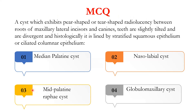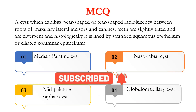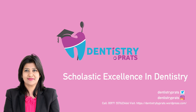To summarize: a cyst showing pear-shaped radiolucency between the roots of the maxillary lateral incisor and canine, with slightly tilted and divergent teeth, lined histologically by stratified squamous or ciliated columnar epithelium, is the globulomaxillary cyst. All non-odontogenic cysts have a similar histopathological appearance, but differ in site and radiographic picture. The pear-shaped radiolucency is very typical of the globulomaxillary cyst. Thank you and keep smiling.